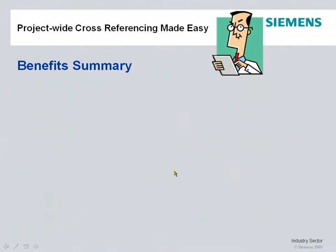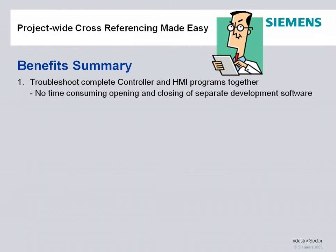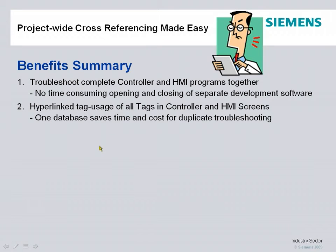The benefits of the project-wide cross-referencing in our Step 7 Basic software for the S7-1200 include the capability to troubleshoot the complete controller and HMI logic together. There's no time-consuming opening and closing of separate development applications or separate software packages to find out where your problem is during startup of a machine or process. All tag usage is hyperlinked — all the tags in the controller and the HMI screen — so you can easily navigate between the two to diagnose any troubleshooting problems. It saves a lot of time and cost compared to using two separate development software tools for those tasks.